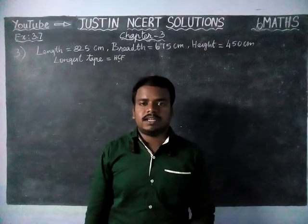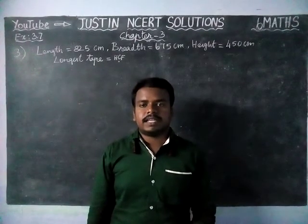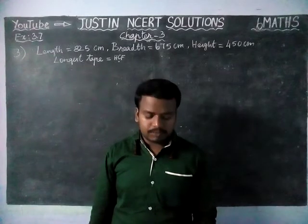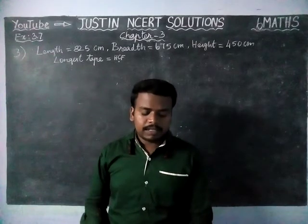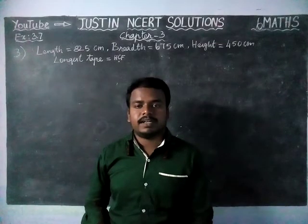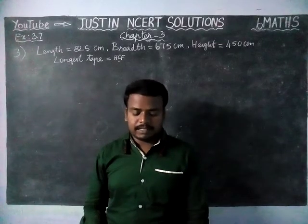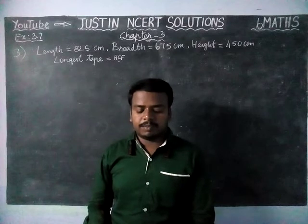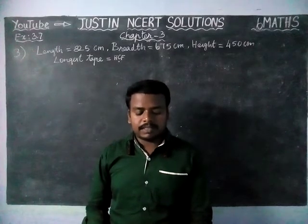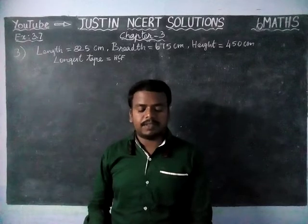Hi students, welcome to Justine NCIT Solutions. In this video, we are going to see 6th Maths Chapter 3 Exercise 3.7 Third Question. The question is: the length, breadth and height of a room are 825 cm, 675 cm and 450 cm respectively. Find the longest tape which can measure the three dimensions of the room exactly.